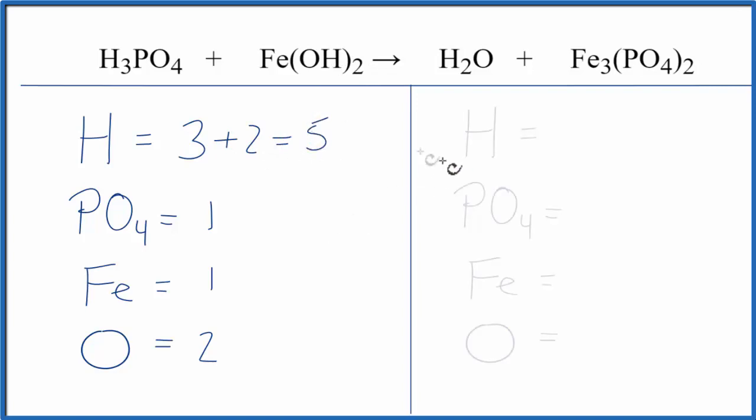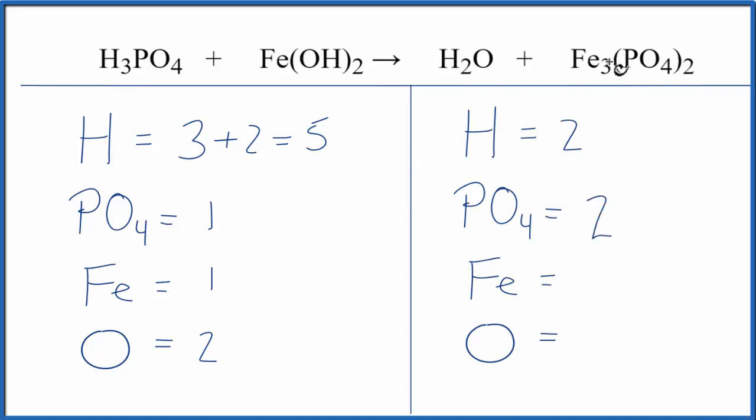On the product side, we have two hydrogens, two PO4s, three irons, and then just the one oxygen. We don't count these oxygens here because we've already counted them. Let's see what we can do. It looks like it might be easier to deal with the PO4 and the iron first and leave the oxygens and hydrogens till last. So let's do that.